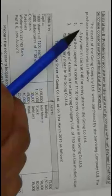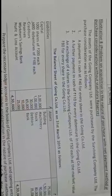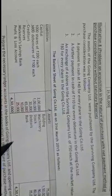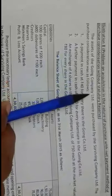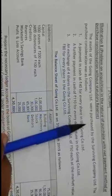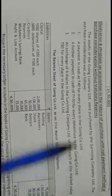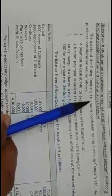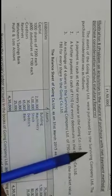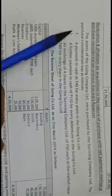We have the eighth problem. The eighth problem is similar to the previous two problems. The assets of Going Company Limited were purchased by Surviving Company Limited. So Going Company Limited is the transferor company and Surviving Company is the transferee company.